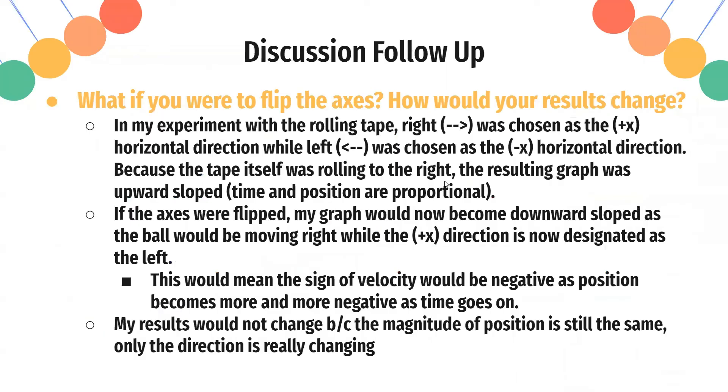In the discussion follow-up, if I were to flip the axes, my graph would now become downward-sloped as the ball moves right. And then if we flip the axes, the plus x direction is now designated to the left. So because of the opposite effect, my graph would now become downward. But this would mean the sign of velocity would be negative, position would become more and more negative. But my results would not change because the magnitude of position, and therefore the magnitude of velocity, is still the same.